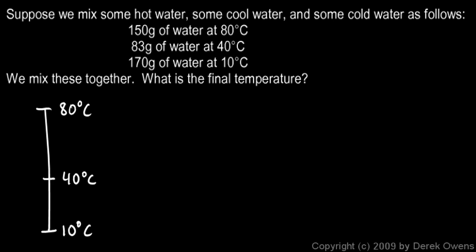Now we know when we mix these together, the hottest thing in there is 80 degrees and the others are colder, so our final temperature is going to be somewhere below 80 degrees, and the coldest thing here is at 10 degrees Celsius, and the other things are warmer, so the final temperature will be above 10 degrees.